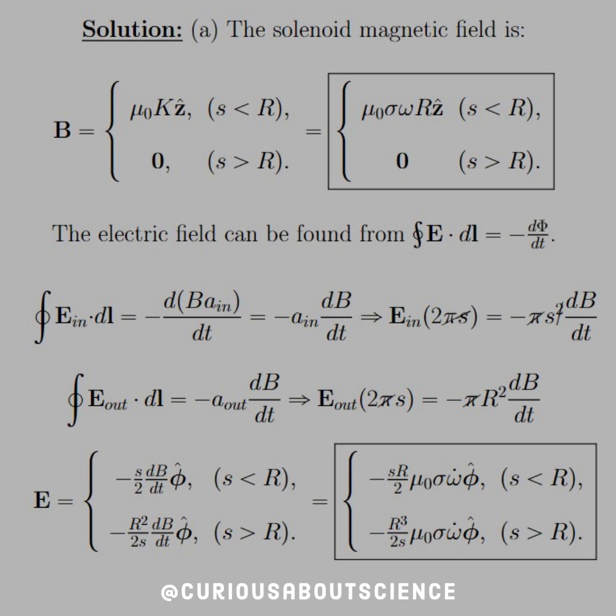So if we condense this in a piecewise definition, we see that for inside the cylinder, we get negative S over 2 db dt in the phi hat direction, since it has to be perpendicular to the magnetic field. And for outside, we have negative R squared over 2S db dt. If we take the time derivative of the field, this is just the field on the inside, we see that the only thing that changes with time is the omega. So we get omega dot. We just combine the R's, so we get R in the numerator for the inside and R cubed in the numerator for the outside.